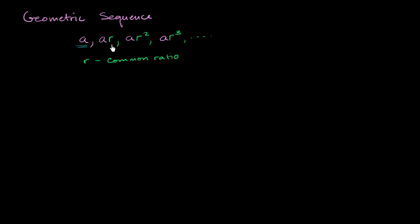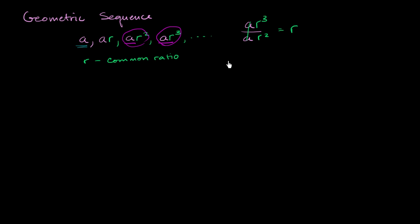Why is it called a common ratio? Take any two successive terms and divide one by the other. For example, ar to the third divided by ar squared — a divided by a is 1, and r to the third divided by r squared is just r. This is true if you divide any term by the term before it: you always get r. That's why it's called a common ratio.